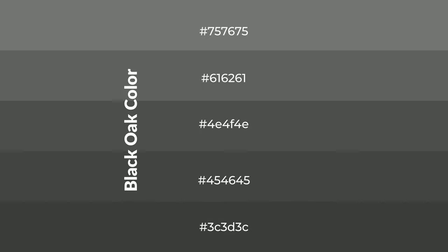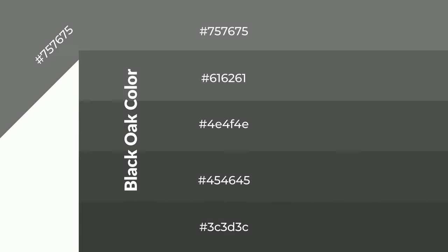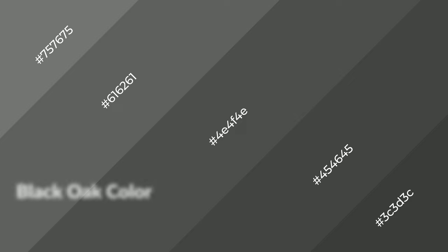To generate shades of a color, we add black to the color, and it is used in patterns. 3D effects, layers and shades create depth and drama. Black oak is a cool color, and it emits calming emotions.